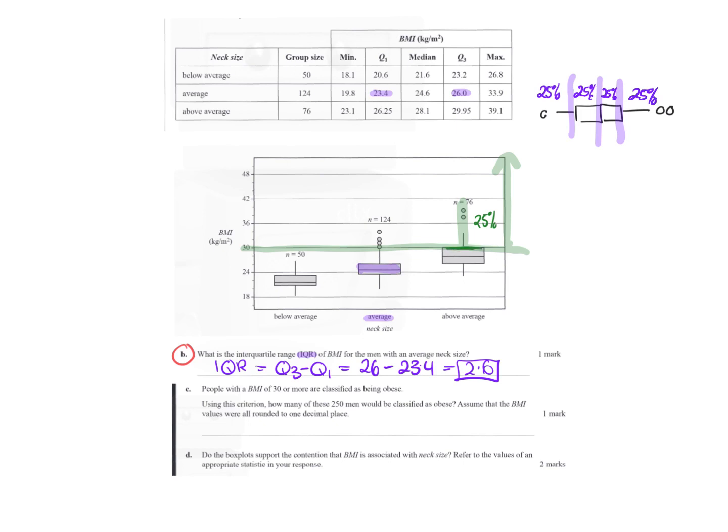This would be 25% of the data. So we can see here, we've got from the Q3 onwards. So we've got 25% of that. So we've got 25% of the 76 above average are going to be in the obese. Plus, we look over here on the average. We've got the whisker, but then we have these outliers that are above the 30. We can actually see how many are above the 30, because outliers are written as a single dot.